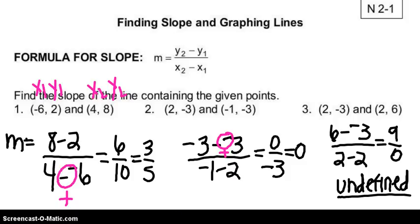Let's look at problem number 2. Using X1, Y1, X2, and Y2, I should have negative 3 minus negative 3 divided by negative 1 minus 2. Minus a negative becomes a plus, so negative 3 plus 3 is 0, and negative 1 minus 2 is negative 3. If I have 0 in the numerator, then my answer for slope is just 0.